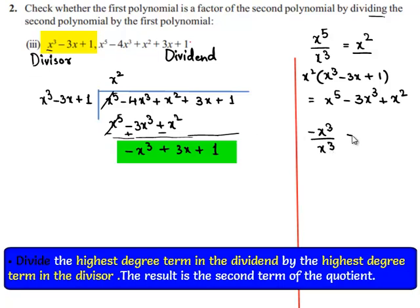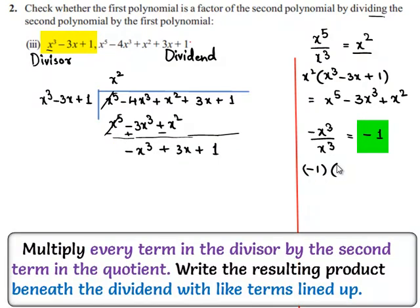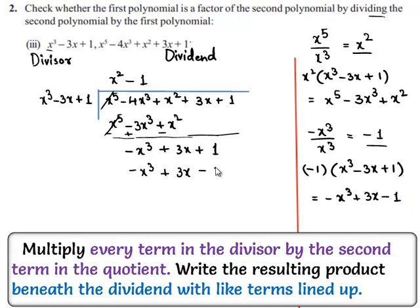On dividing -x³ by x³ we get -1. So -1 multiplied by the divisor, which is x³ - 3x + 1, gives -x³ + 3x - 1. We write -1 at the place of the quotient and -x³ + 3x - 1 is written below.